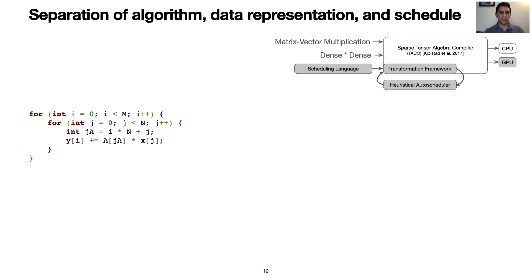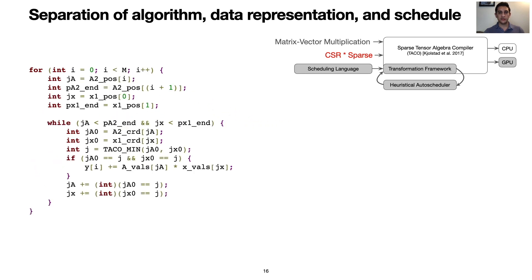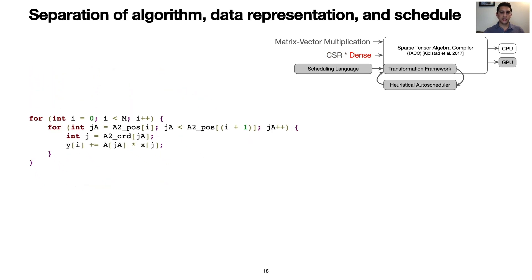We can try different format combinations now, such as compressed sparse columns. This format is like CSR, but stores columns before rows. Or we can try compressed sparse rows in a sparse vector. This code requires performing a two-finger merge between the columns of the matrix and the non-zeros of the vector. We can also try CSR with a dense vector. The dense vector allows for random access, which makes the merge code unnecessary.